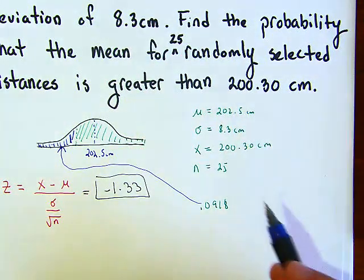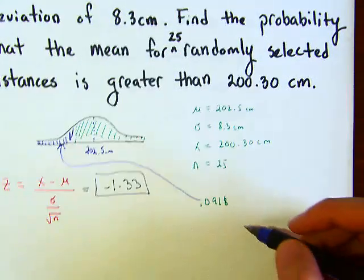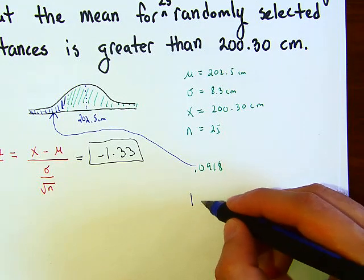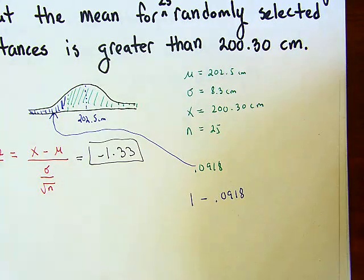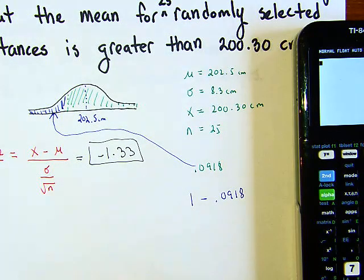So to find this area in the green, all we need to do is 1 minus the 0.0918. Let's see what we get. So if we have 1 minus 0.0918...